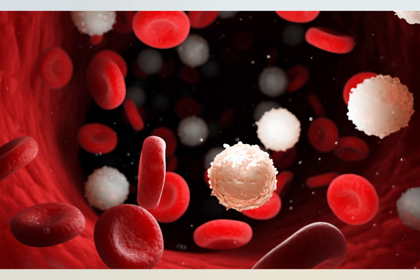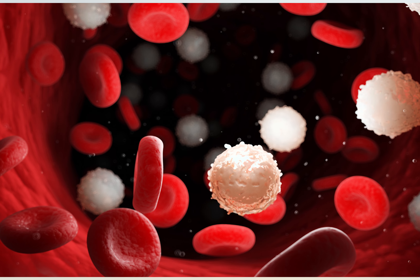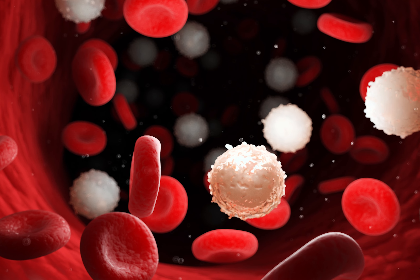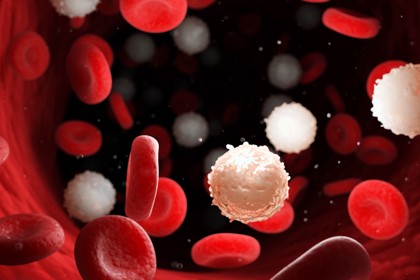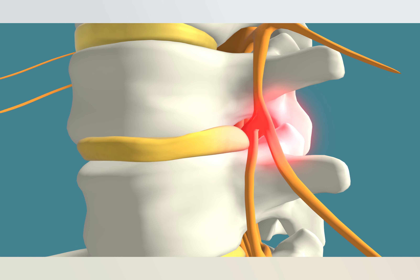When your body detects tissue damage, the immune system responds by sending white blood cells to that area to protect it in the form of inflammation. Radiculopathy often happens as a result of a bulging or herniated disc, which pinches the root ending inside the foramina and causes inflammation.